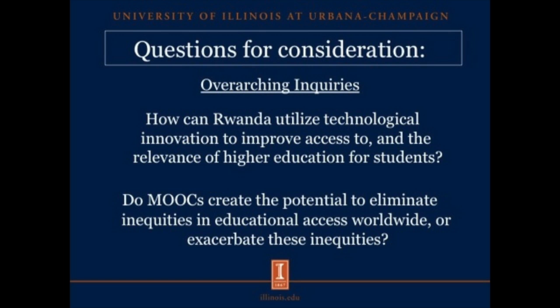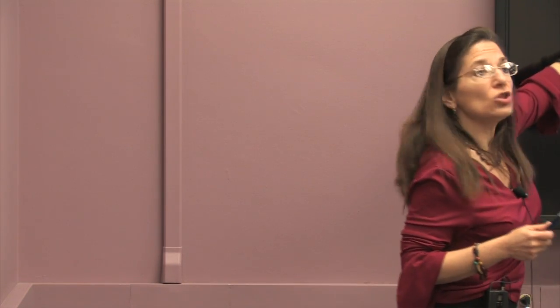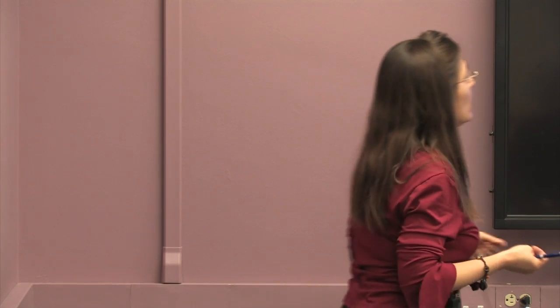So now we have two inquiries: can Rwanda utilize technology to improve access to higher education, and knowing what we now know about MOOCs, can MOOCs play a part in expanding that access? That brings us to the third segue — the Kepler model.